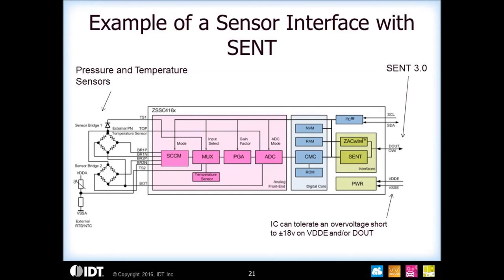A block diagram of a typical SENT sensor signal conditioner shows support for two bridges, two external temp sensors, and an internal temp sensor. Through configurations on the part, you can bring out any combination of these bridge values or temperature values through the SENT output, allowing for a lot of versatility in how your output is formatted. SENT also supports over-voltage and reverse battery — typically around plus or minus 18 volts — on the supplies and on the SENT output, though this is not defined in the standard.